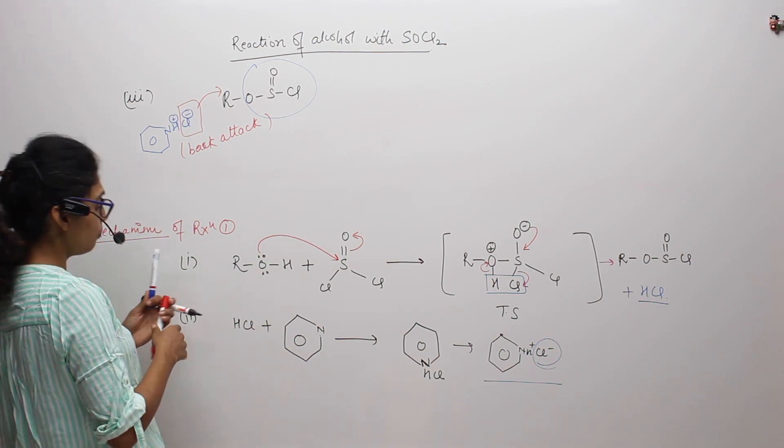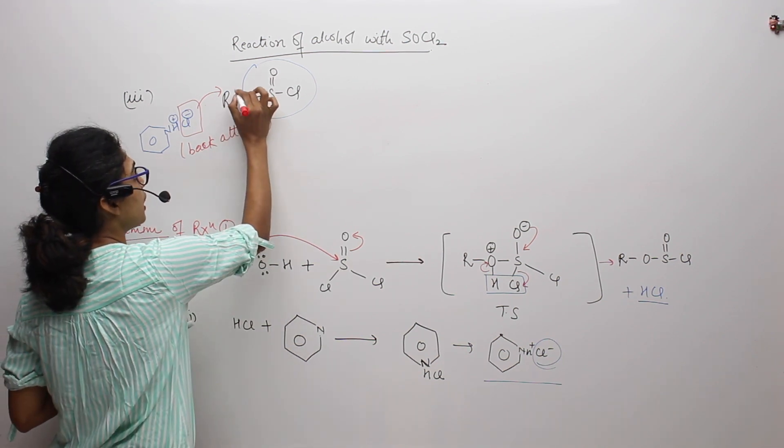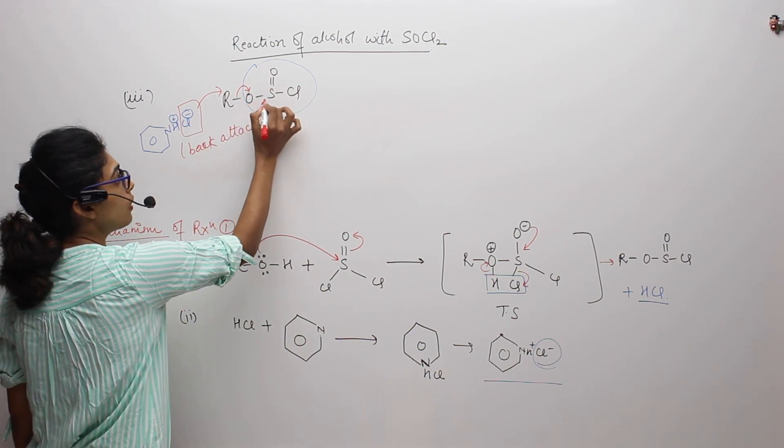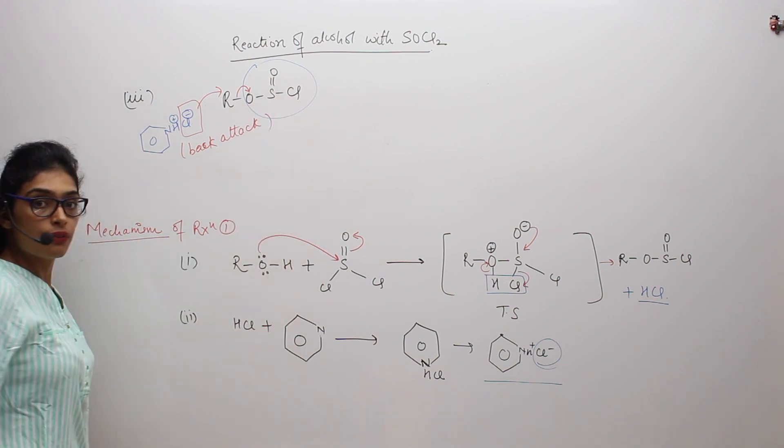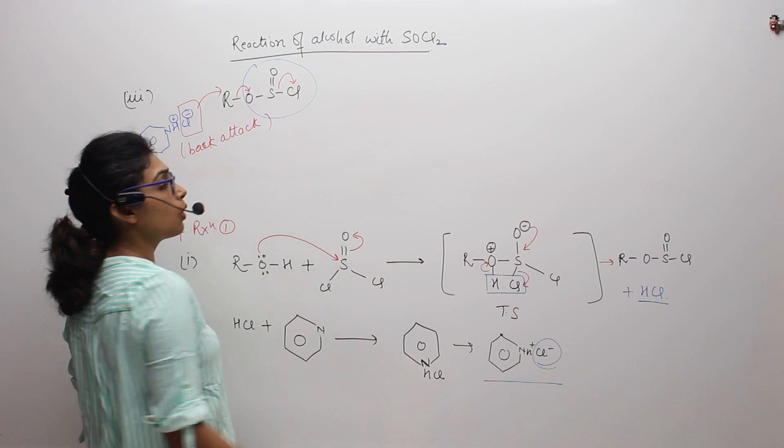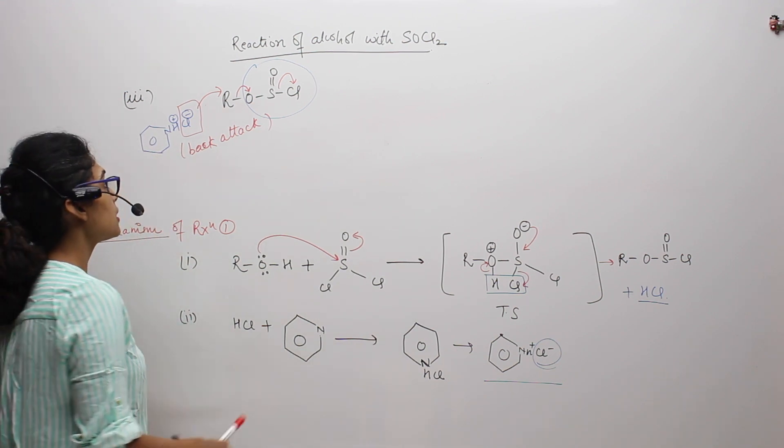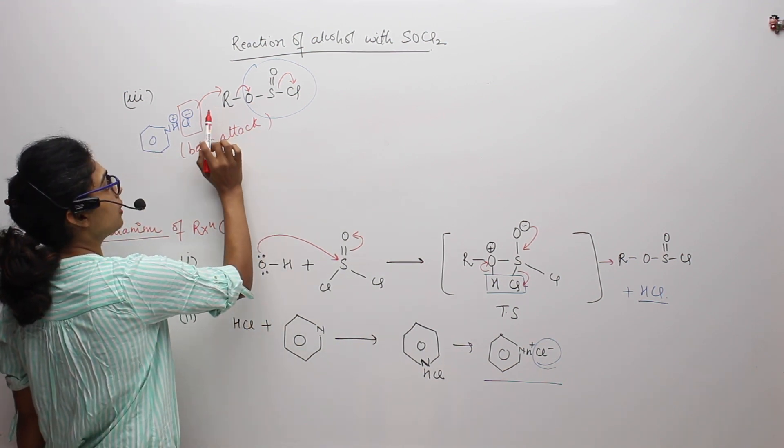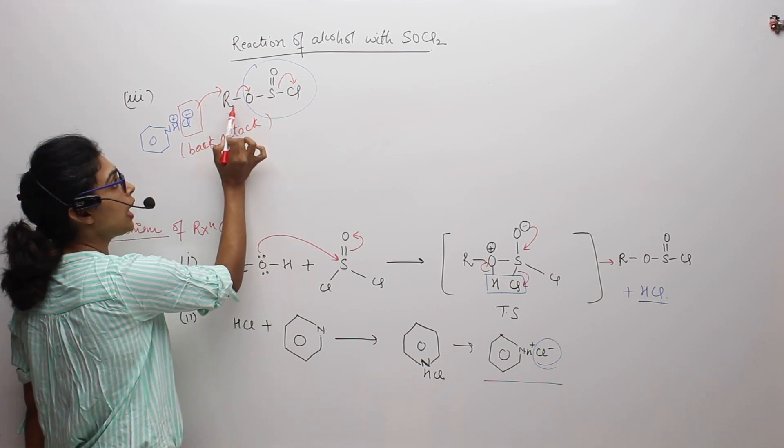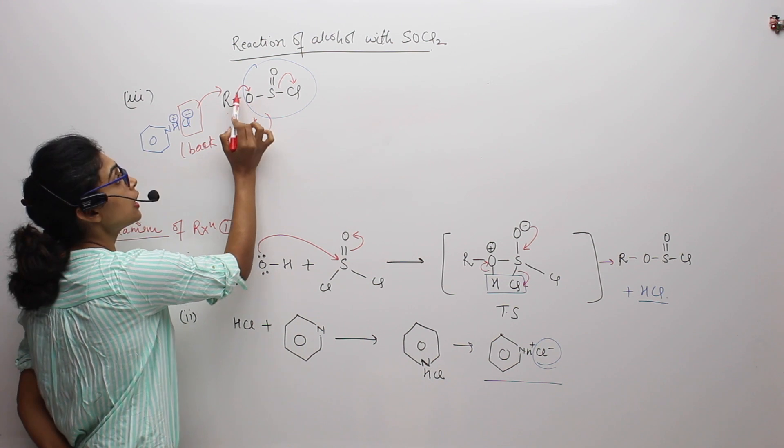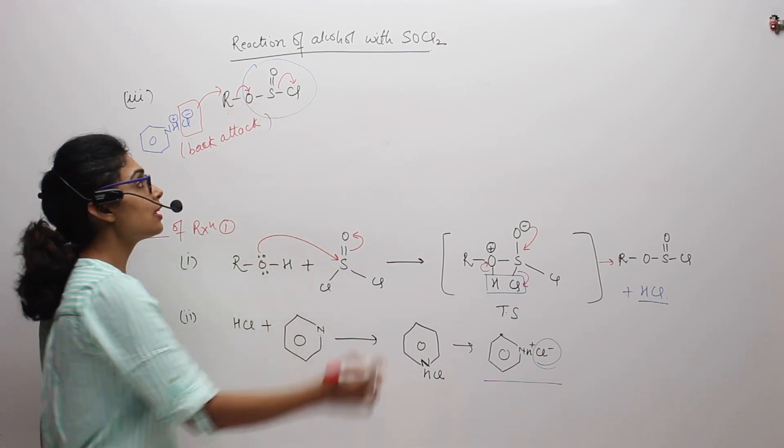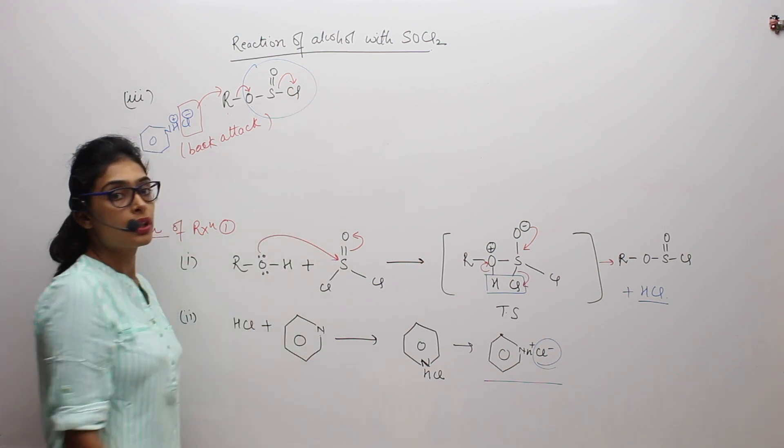Now when this leaving group will come out, the bond between R and O will break. When the bond between R and O will break, this O will try to form a new bond with sulfur. And in that case, sulfur will break its bond with chlorine. Just look at here again. So what is happening? This chlorine minus is attacking on R. R is breaking its bond with existing oxygen. This oxygen will try to form a new bond with sulfur and sulfur will break down its bond with chlorine.